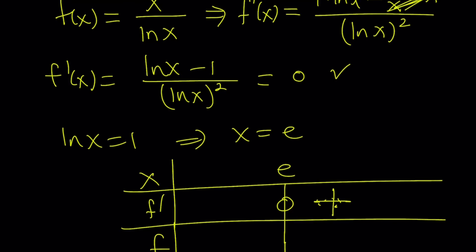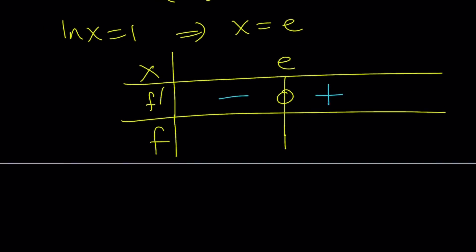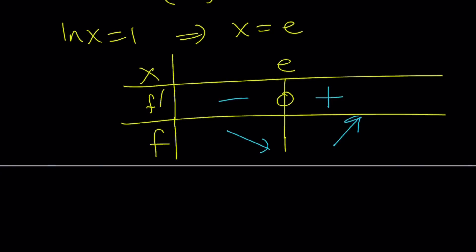If x is greater than e, the first derivative is going to be positive; otherwise it's going to be negative. This means our function is actually going to be decreasing and then increasing. But we also have an issue at x equals 1, so we include that in our chart as well. Obviously it's also negative to the left of e, and x needs to be positive, so we put 0 on our chart too. One table gives us a lot of information if you can digest it.